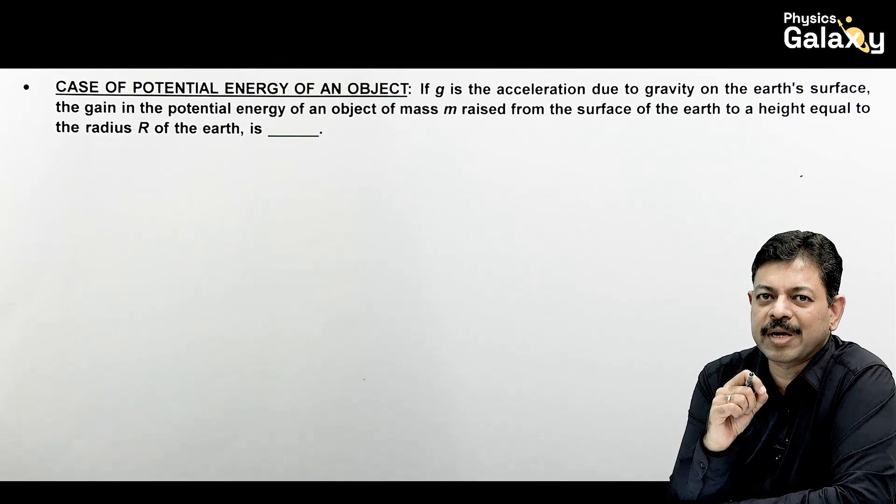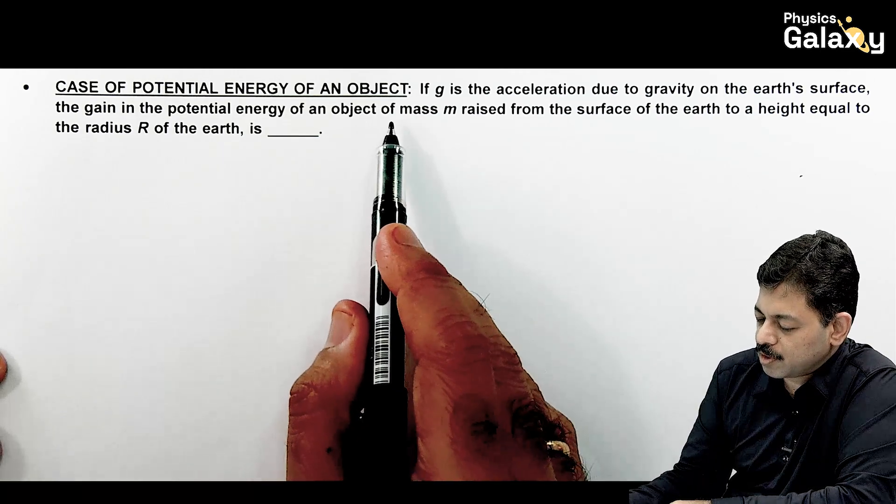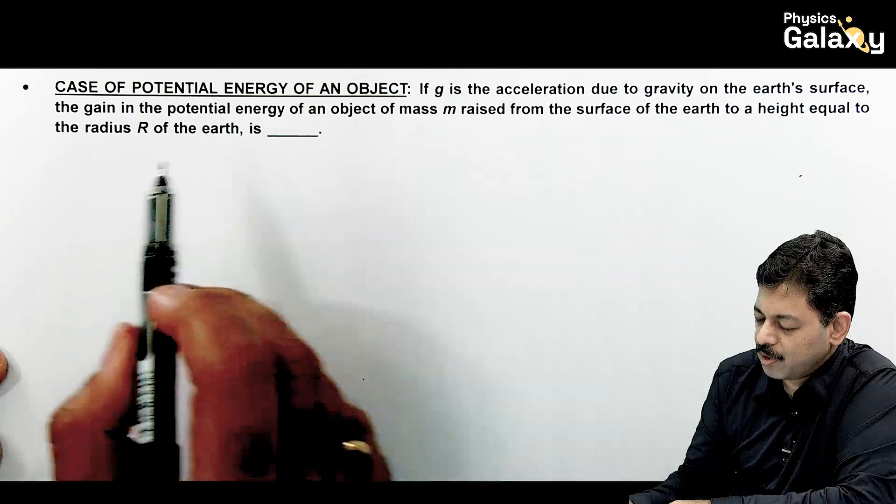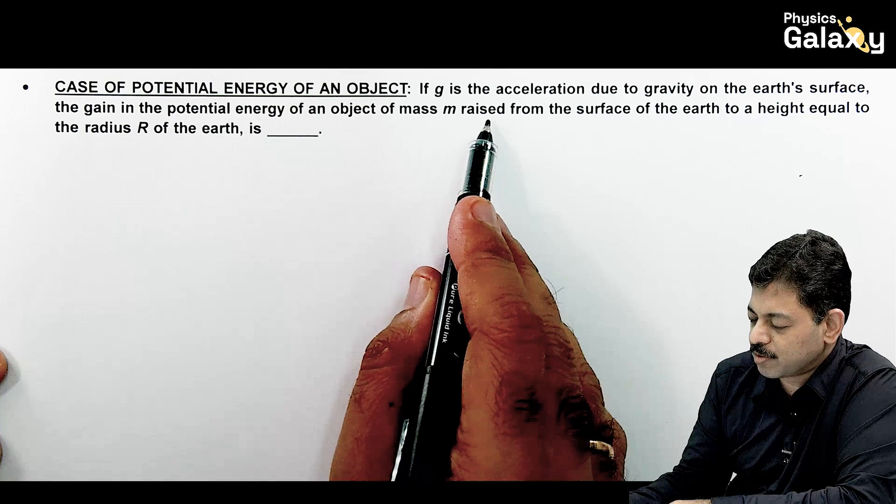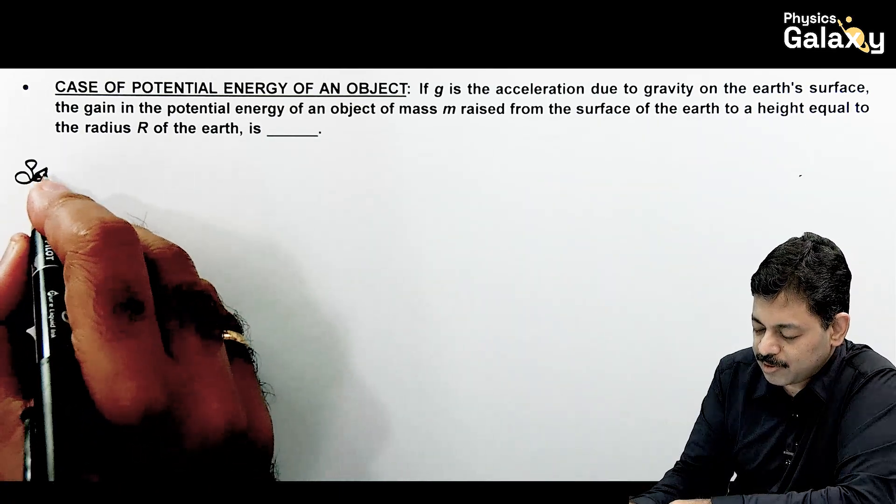We are going to talk about the case of change in potential energy in gravitational field. This situation is saying, if g is the acceleration due to gravity on Earth's surface, it is asking us to calculate the gain in potential energy of an object of mass raised from the surface of Earth to a height equal to the radius of Earth. A very basic case.